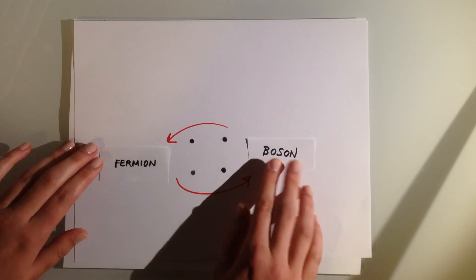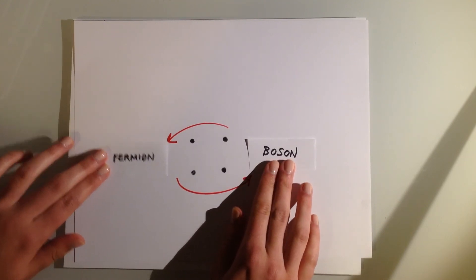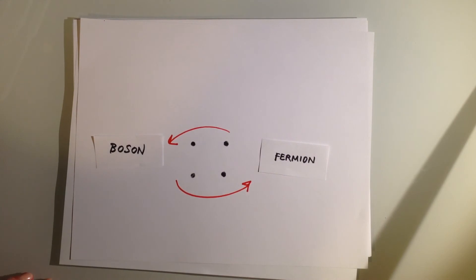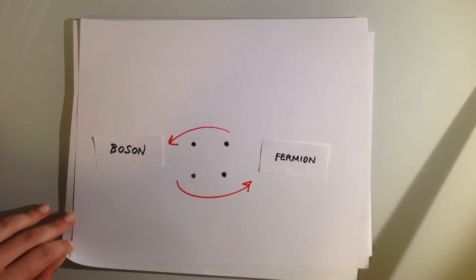So for every fermion, there is a boson counterpart, and for every boson, there is a fermion counterpart. By requiring this, we double the amount of particles that there should be.